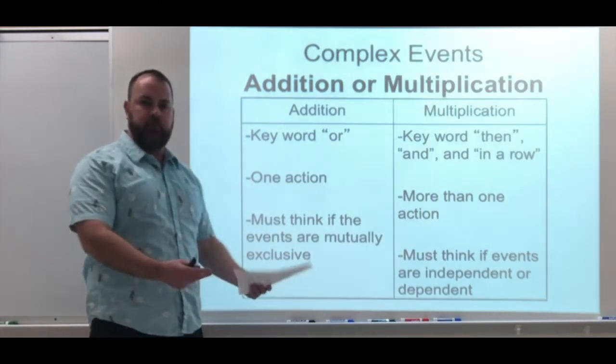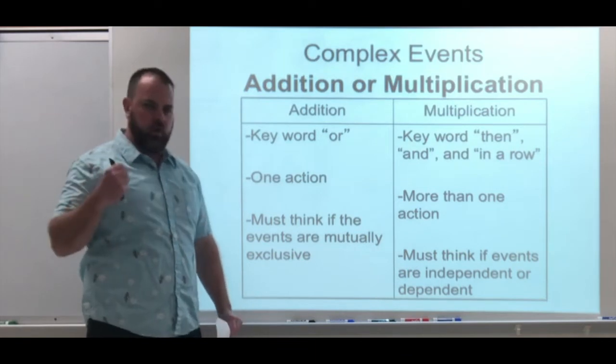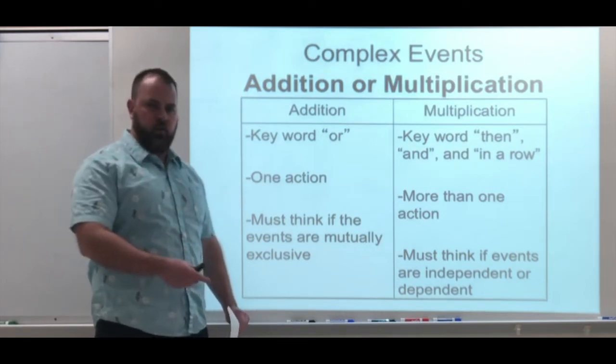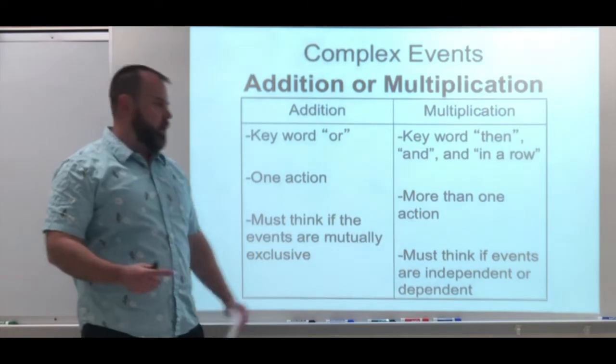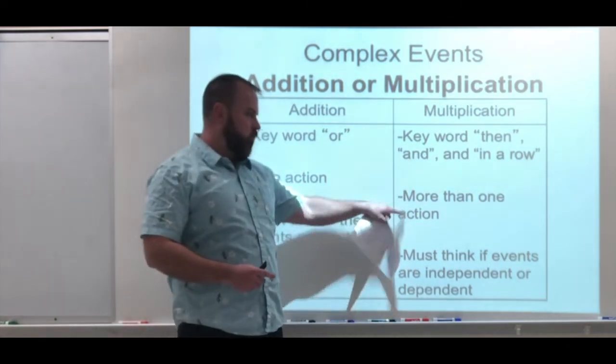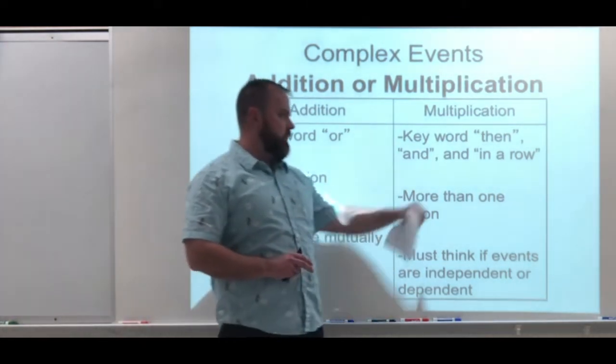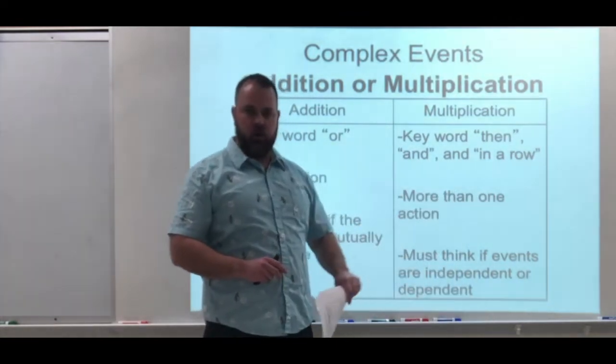Multiple outcomes could happen that would be considered a success, but only one action, pulling only one card, rolling the die only one time. This video is going to look at the multiplication rule. More than one action, those actions are going to be connected by keywords then, and, and in a row.